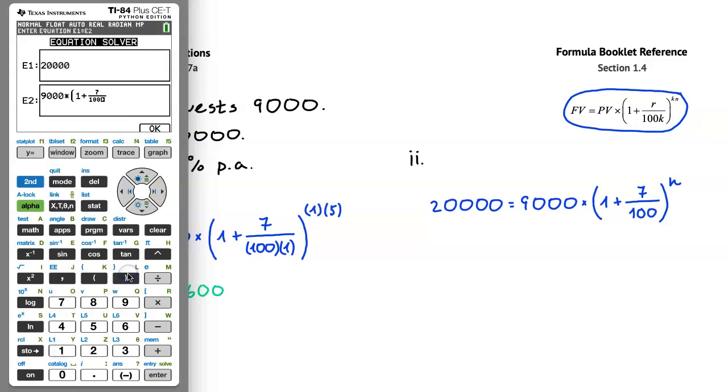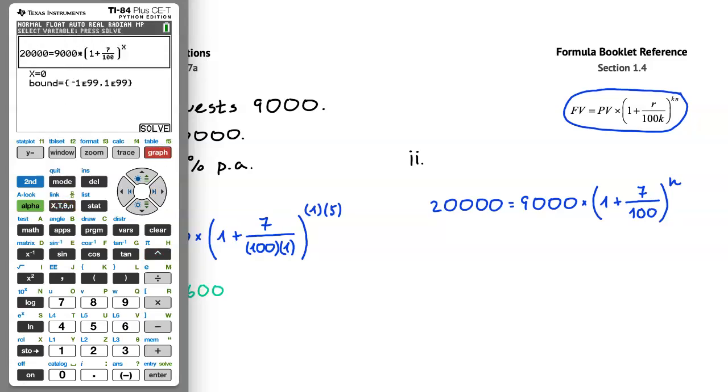And after closing the parentheses, we'll put our unknown in the power, and for this unknown here, I will use x. Now we just have to press OK, and then solve, so basically the graph button, twice. So we got that x, or n, is 11.8 years.